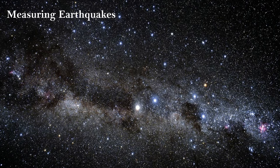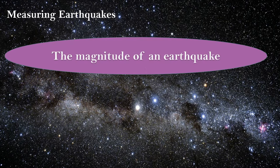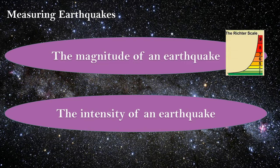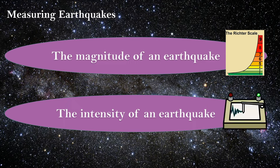Now let's see how we can measure earthquakes. There are two measures: magnitude and intensity. Magnitude is the size of the earthquake, and intensity is how intense the earthquake was. To measure magnitude, we use the Richter scale, while to measure intensity we use a seismograph, which is a device that records the intensity of an earthquake.